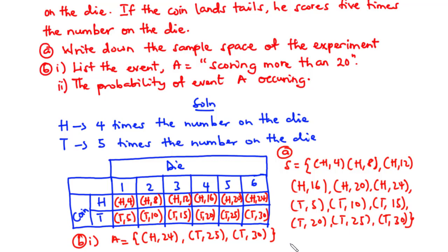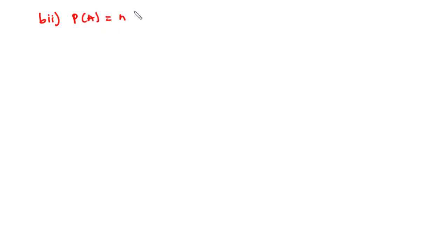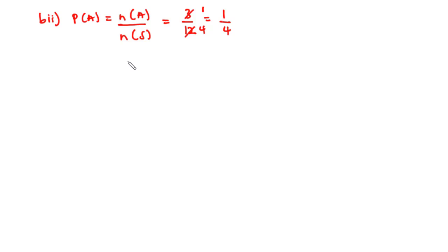Now for B.ii, the probability of event A occurring. The number of ways event A can occur is 3. The total number of elements in the sample space is 12. So the probability of event A occurring equals 3 over 12. Simplifying — 3 goes into itself once and into 12 four times — so the probability of event A is 1 over 4.